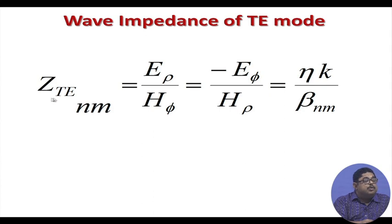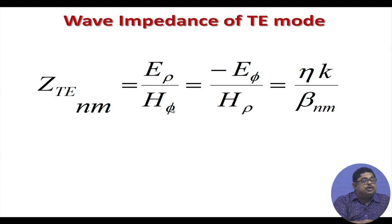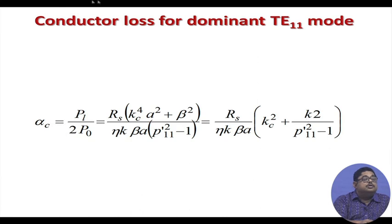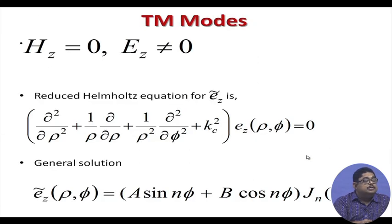The wave impedance is defined from the basic ratio of electric to magnetic field for the power-carrying components — e_rho cross h_phi carries power, so we take that ratio rather than e_rho / h_rho. The conductor loss is also computed from the standard formula, and beta determines both the wave impedance and the attenuation.